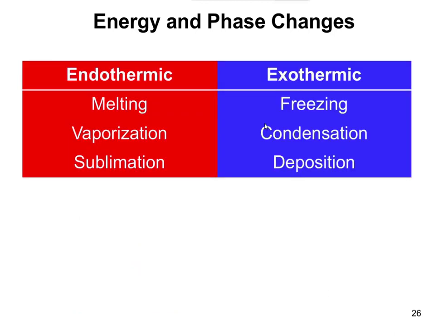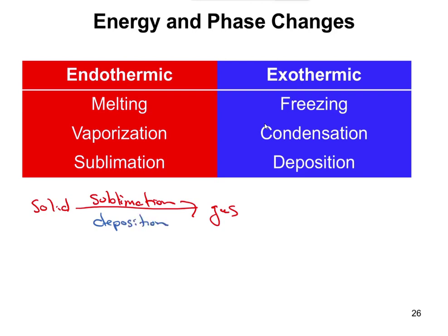To summarize: endothermic processes are melting and vaporization. Sublimation is when you go from a solid directly to a gas. The classic example is dry ice, which is frozen carbon dioxide — it doesn't go into a liquid state; you heat it and it turns directly into a gas. The opposite, going from a gas directly to a solid, is deposition. These two processes skip the liquid phase entirely. In general, anything going to a higher energy state is endothermic, and anything moving to a lower energy state is exothermic.